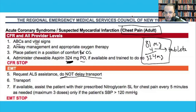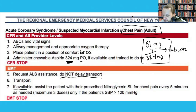Also request ALS assistance and don't delay transport. Give your treatments, give your aspirin, then start packaging the patient — put them in a stair chair, onto the stretcher — and call ALS backup to your location while moving them to the ambulance. Don't sit on the couch waiting for ALS. If a cath-lab-capable cardiac center is closer than ALS arrival, start moving to the hospital. If available, assist with nitroglycerin as long as the patient has chest pain and systolic BP is above 120.